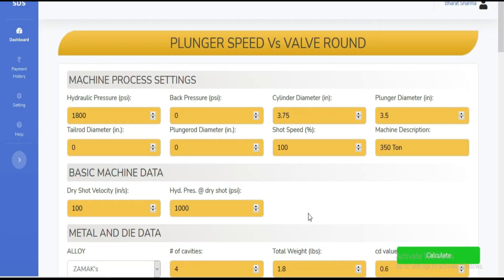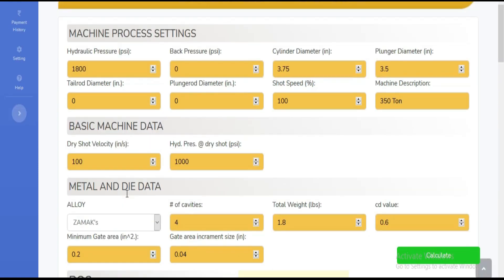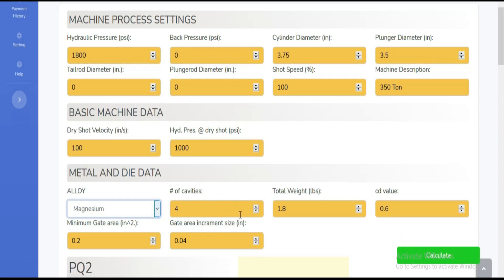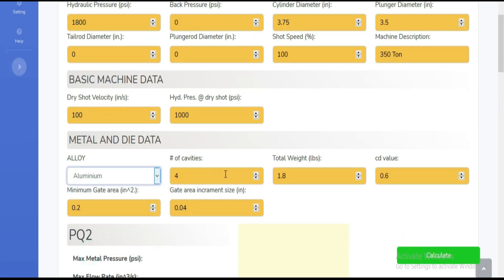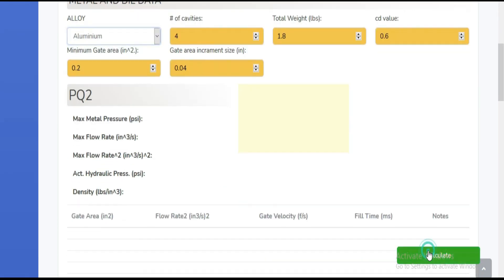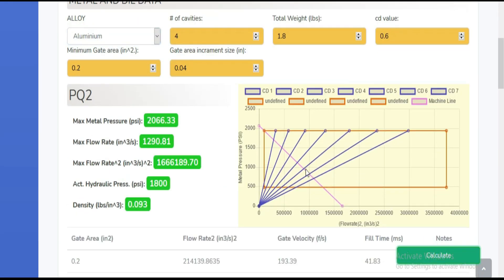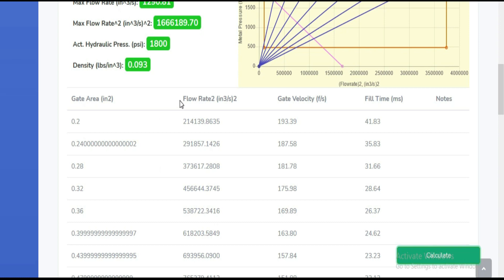The best tool of this software is complete PQ square analysis. By entering a few inputs, you can do a complete PQ square analysis. Not much complex calculation is required to do this analysis. In this tool, you can do analysis for zinc alloys, aluminum alloys, and magnesium alloys. That is the uniqueness of this tool.